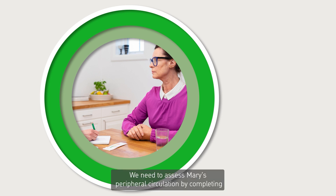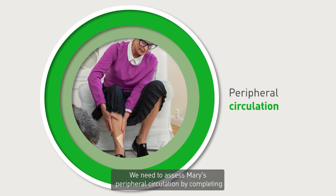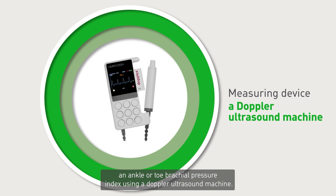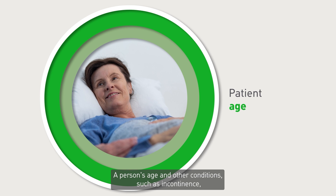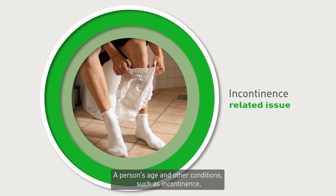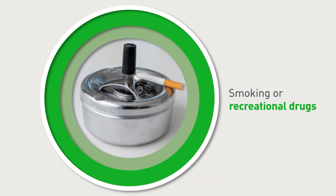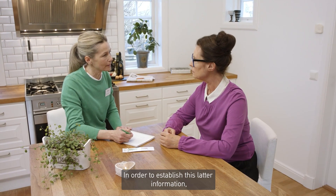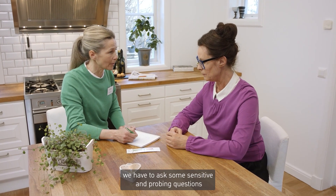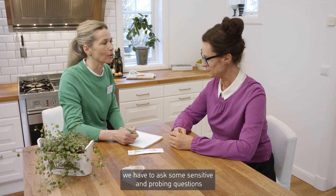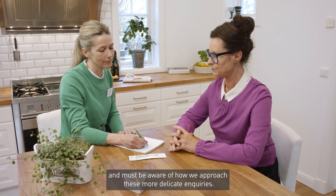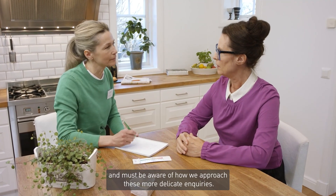We need to assess Mary's peripheral circulation by completing an ankle or toe brachial pressure index using a Doppler ultrasound machine. A person's age and other conditions such as incontinence, smoking or taking recreational drugs can also delay the healing process. In order to establish this information we have to ask some sensitive and probing questions, and must be aware of how we approach these more delicate enquiries.